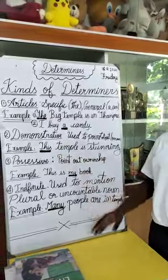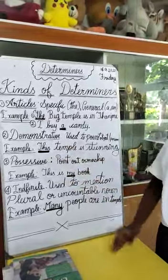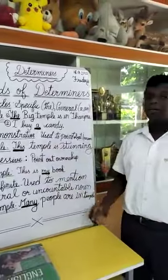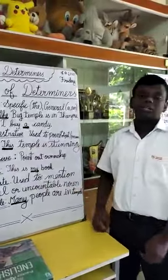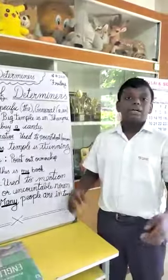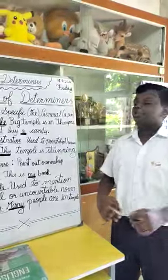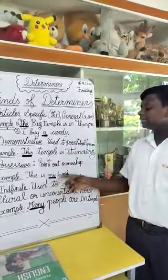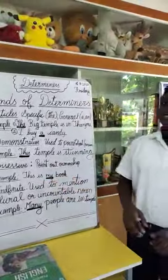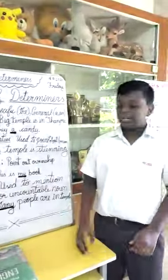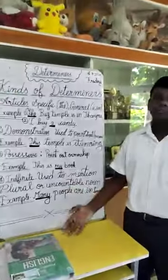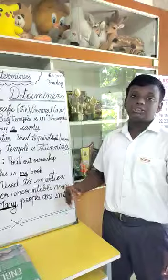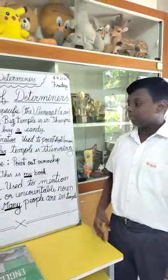So, this is called demonstrative. Next, possessive. Possessive is nothing but telling about ownership or possession. For example, 'this is my book'. Here, I am telling that this is my book — it belongs to me. I am claiming ownership of it myself.